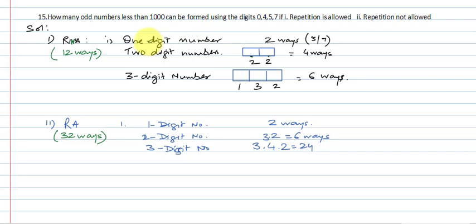In this, what should there be? It can be a one-digit number. What number smaller than 1000 can it be? It can be a one-digit number, a two-digit number, or a three-digit number. They will be odd numbers, less than 1000, with the condition that repetition is not allowed. So what can a one-digit number be? An odd number, that means either 5 or 7. So there are two ways.